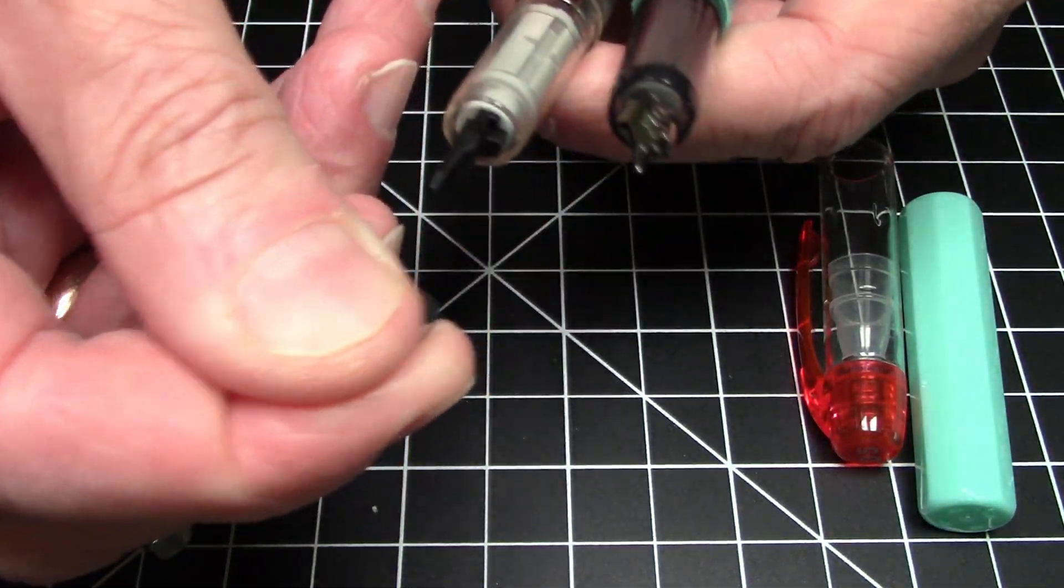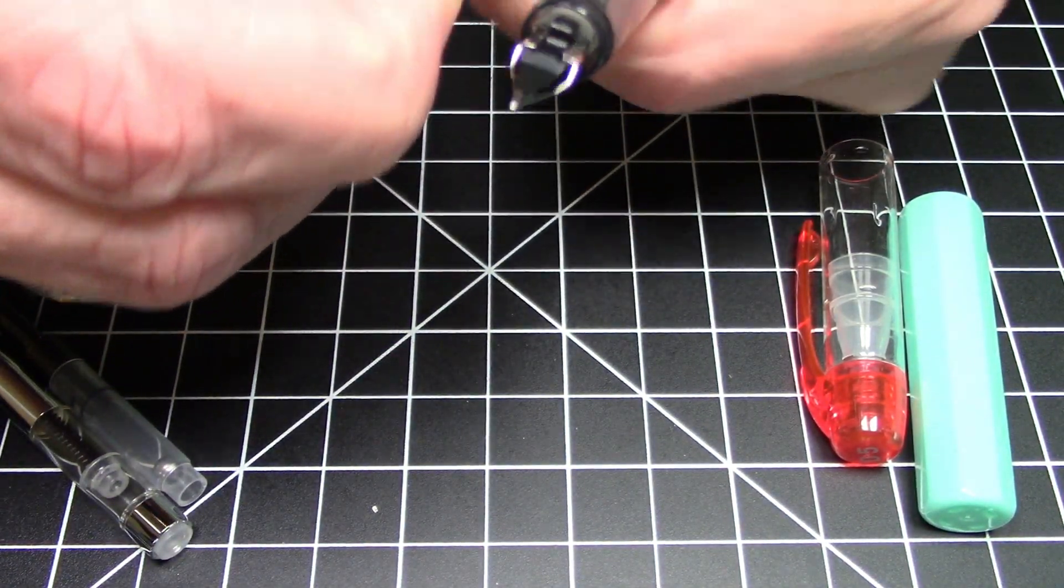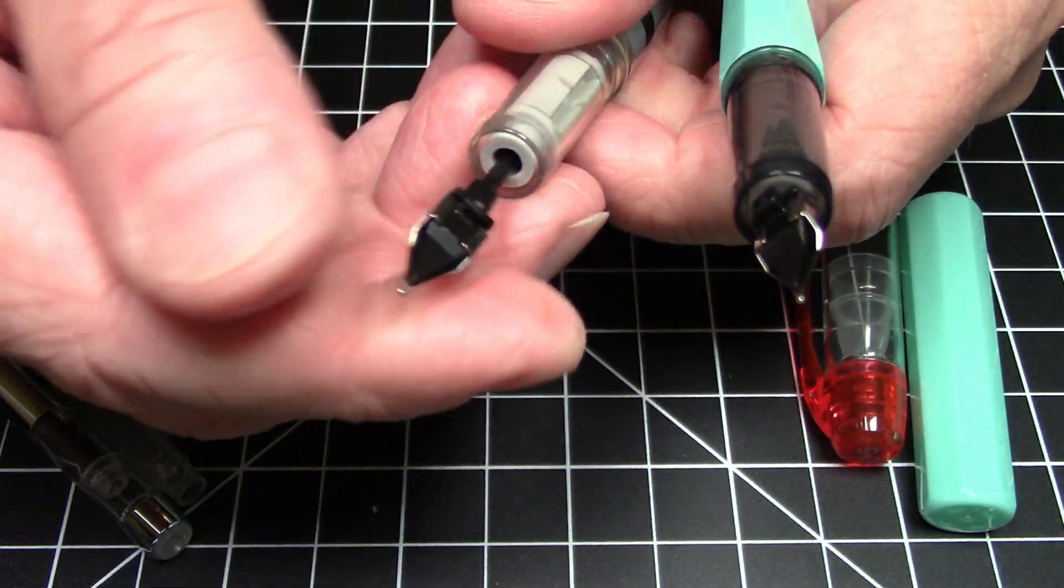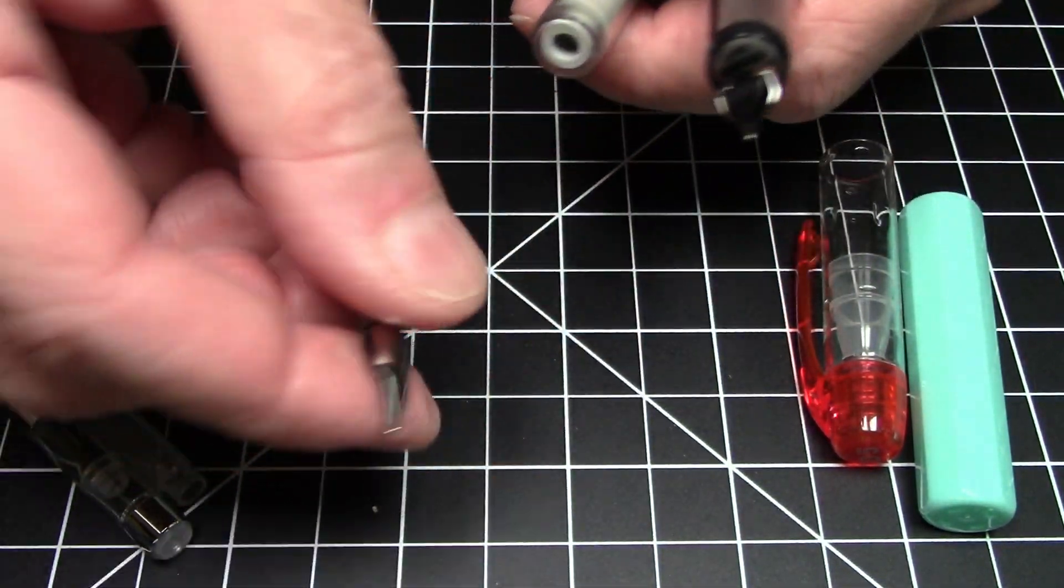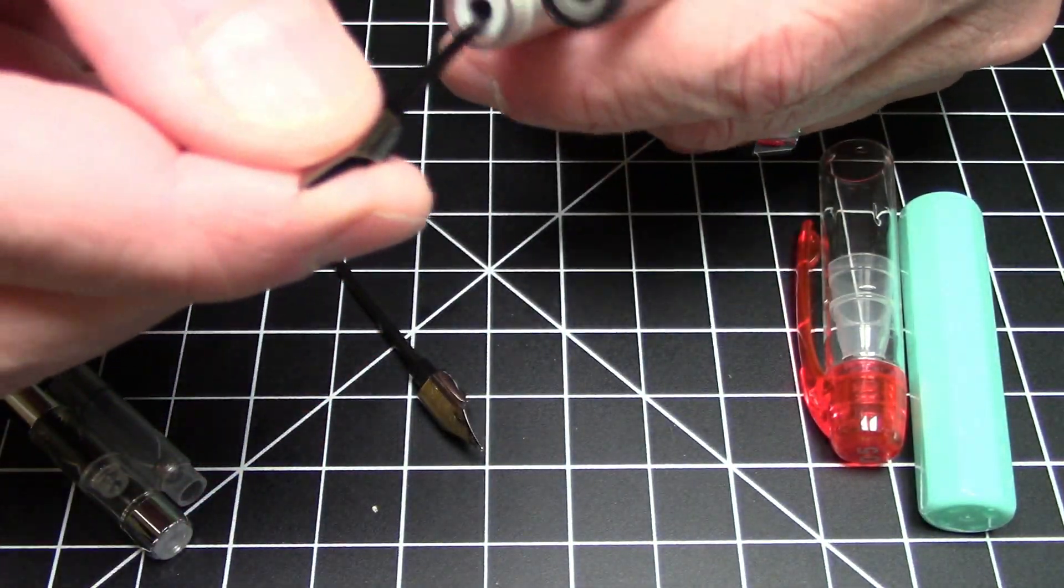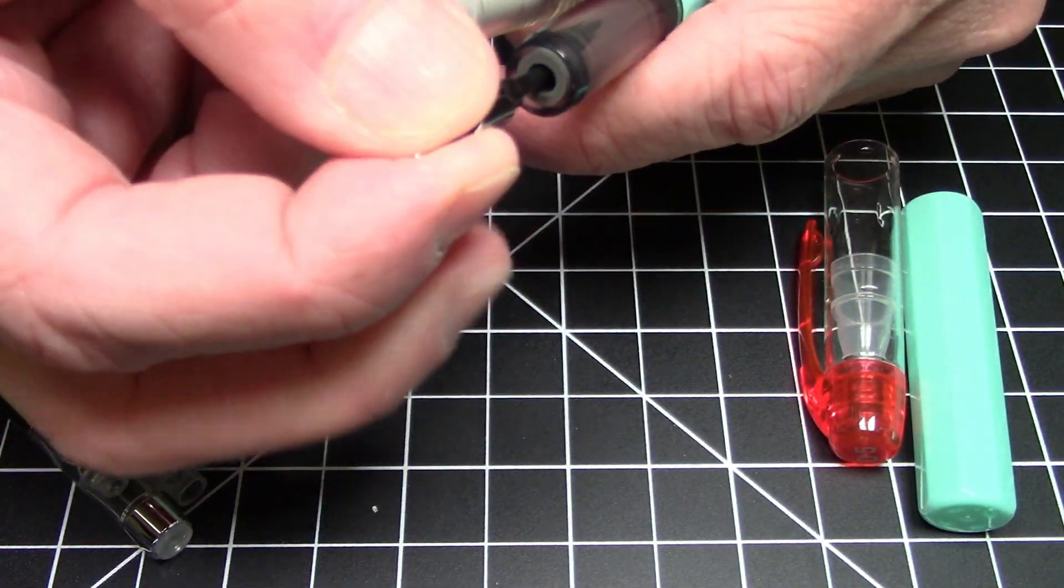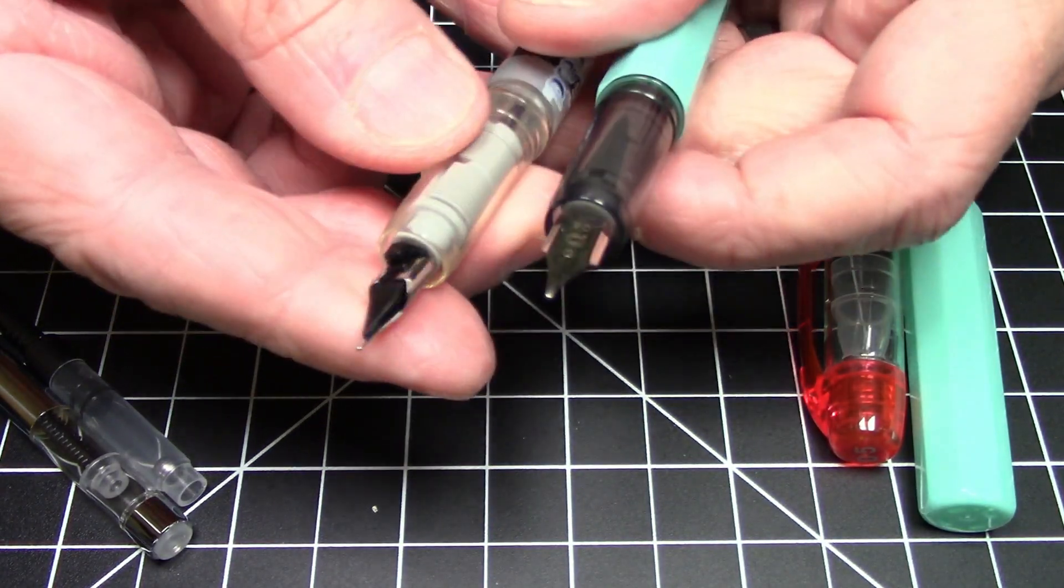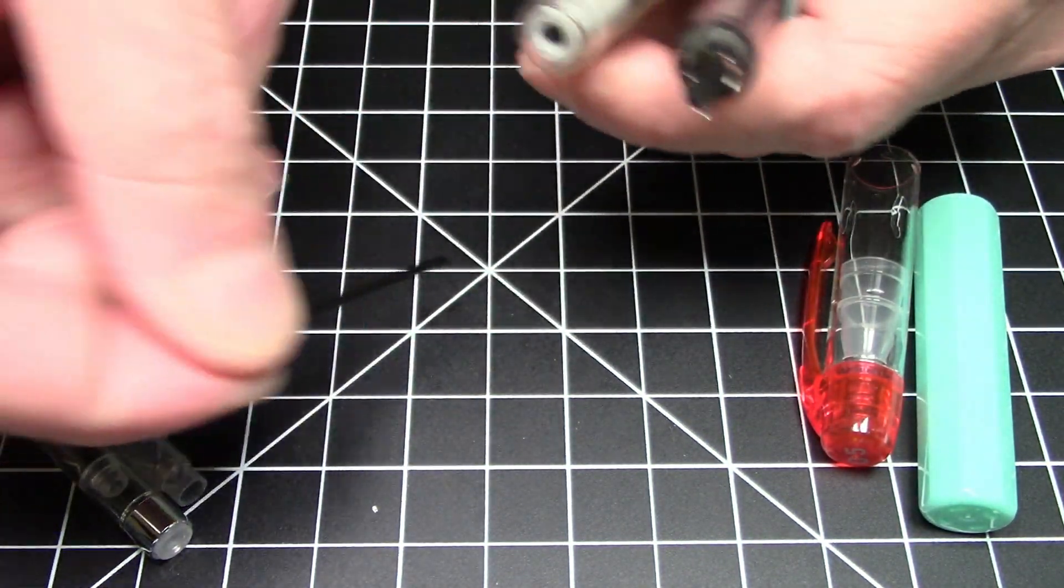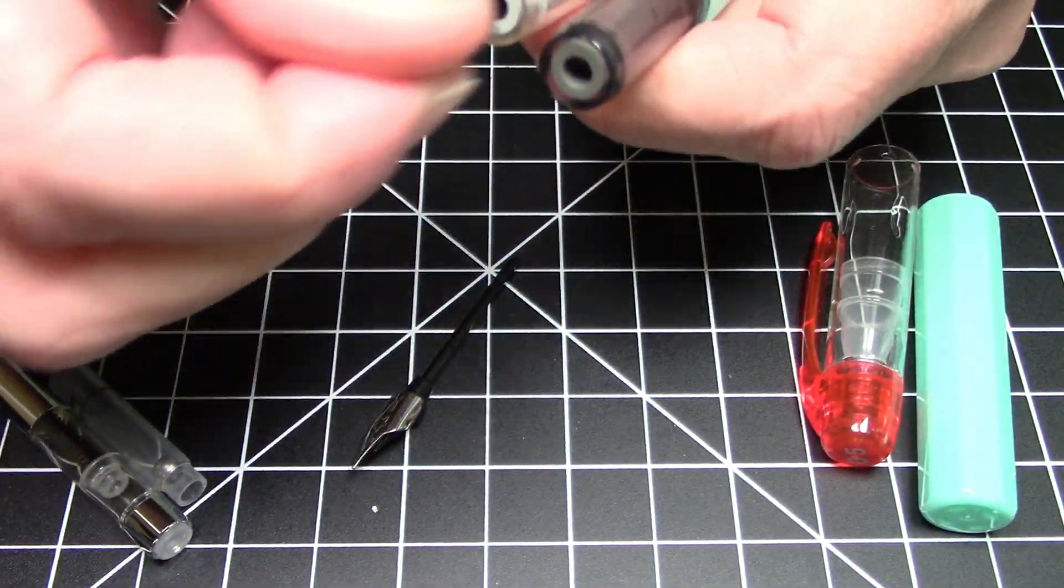Let's see if the nibs are swappable. So on a normal Platinum Preppy, the nib unit just pulls right out of the pen like this. And on this one it does as well. And can we swap them? Yes, we can. So these do seem to be the same nib units, which is kind of cool. Let's just put that back the way they belong.